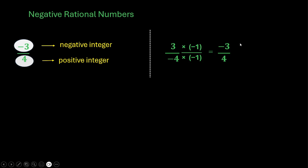Now, again, numerator is negative and denominator is positive. So, this is again a negative rational number.